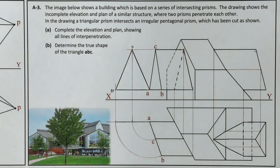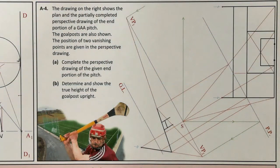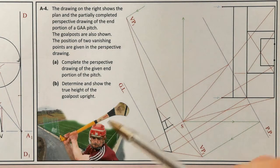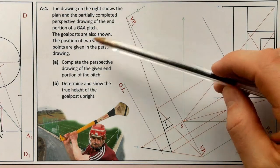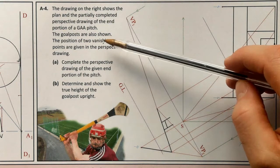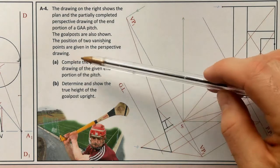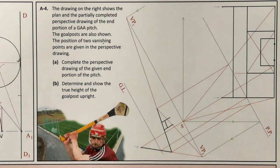The last question on this page — A4. The drawing shows the plan and partially completed perspective drawing of the end portion of a GAA pitch. The goal posts are also shown. The position of two vanishing points is given in the perspective drawing. Part A: complete the perspective drawing of the given portion of the pitch. Part B: determine and show the true height of the goal post upright.